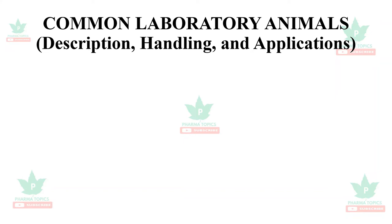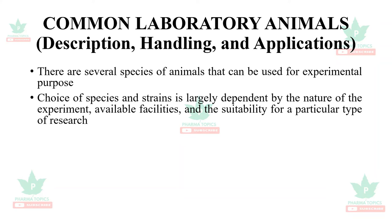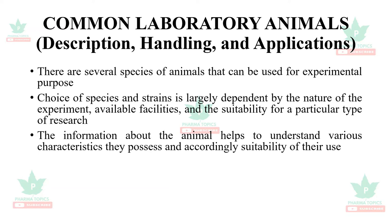Handling and applications will be covered in subsequent series. There are several species of animals that can be used for experimental purposes. The choice of species and strain is dependent upon a number of factors and the suitability for a particular type of research. Information about the animal helps to understand the various characteristics they possess.